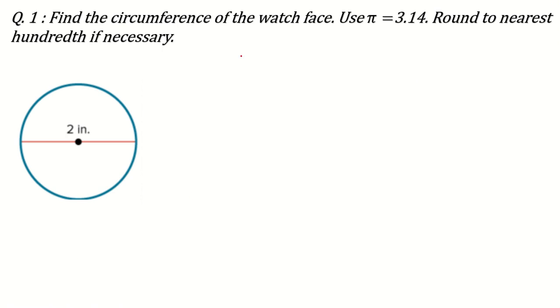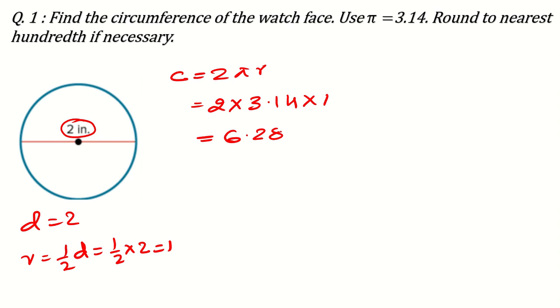Let's do this question. First you write the formula here, C is equal to 2πR. You can find the radius also by making it half because here diameter is 2. What will be radius? Radius will be half of diameter means half of 2 and half of 2 is 1, or you can do with the diameter also. This is 2 multiply 3.14 and radius is 1. So 2 multiply 3.14 is 6.28 inches. This is the answer.